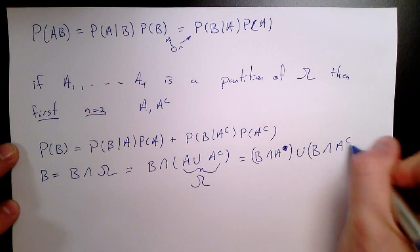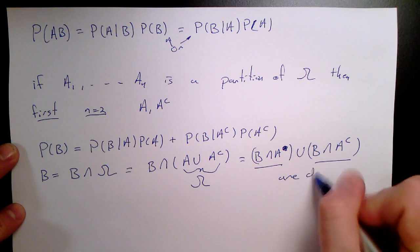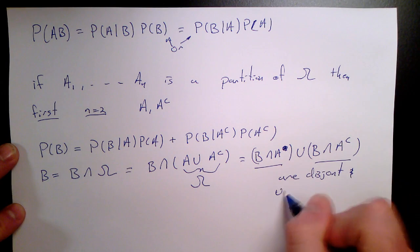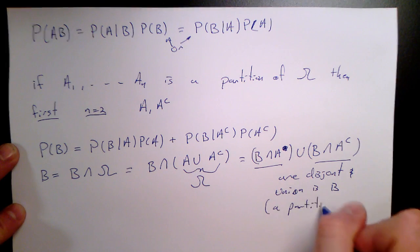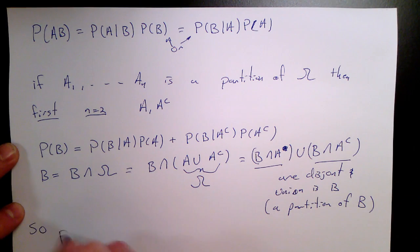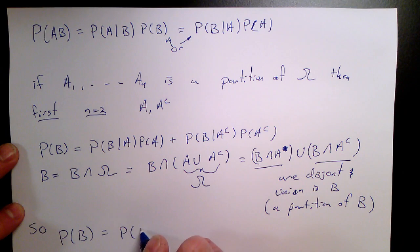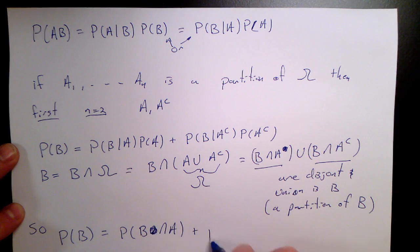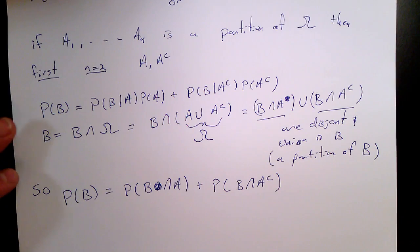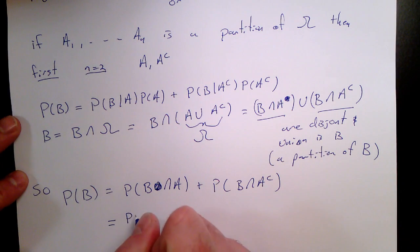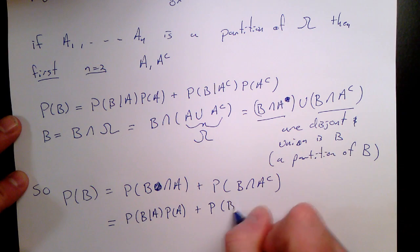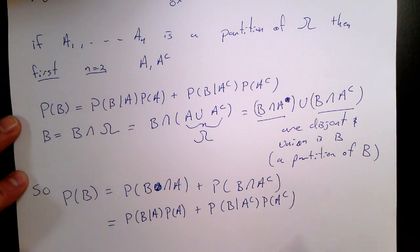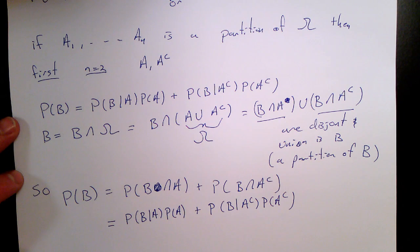The idea is: write B intersect omega as just B, then write omega as A union A complement, and distribute the intersection across. We get that it's the union of two sets: A intersect B and B intersect A complement. Those two sets are disjoint, so they form a partition of B. Whenever you have a partition of B, the probability of B is just the sum of the probabilities of the partition terms. Using the definition of conditional probability, we write A intersect B as P(B|A) times P(A), and A complement intersect B as P(B|A complement) times P(A complement).